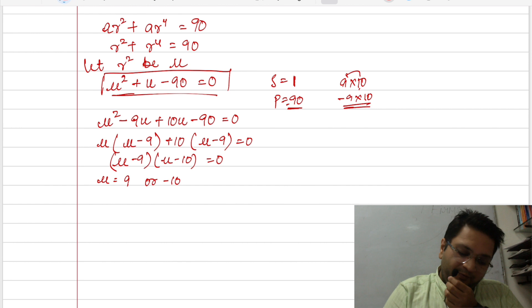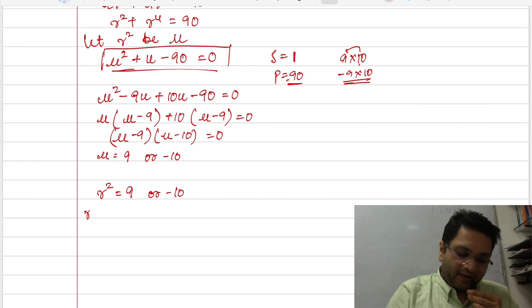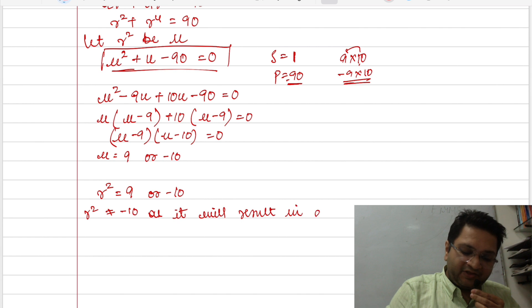You know what u is? r square. So r² is either equal to 9 or equal to minus 10. Now, r² cannot be equal to negative 10 as it will result in an imaginary number value. So therefore, r² is equal to 9. That means, r is equal to plus minus 3.